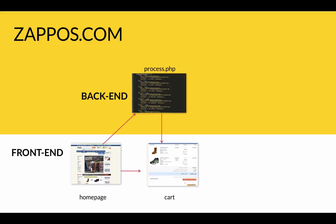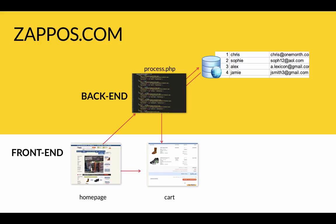That PHP file has some programming written in it — just a bunch of steps from top to bottom. For example, step one might be: is this person a user of zappos.com? Step two: if they are, send them to the cart page. When it needs to check step one, it goes and looks in the database. A database isn't really anything to worry about — it's like a glorified Excel sheet, columns and rows with data. So the code looks in that database, sees Chris's name in there, and the database goes back to the PHP and says yes, everything's good — send him to the cart.